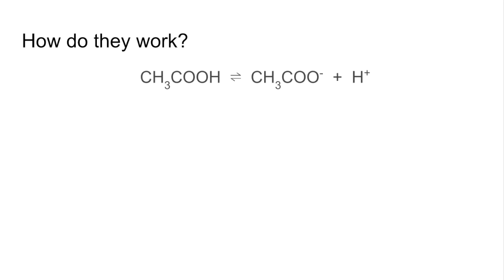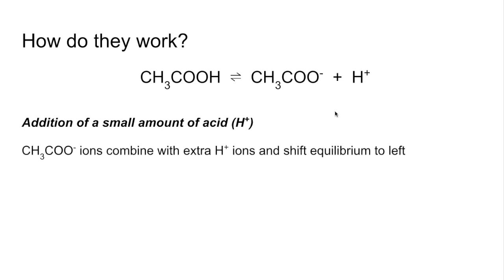So how do they work? There's the buffer system from the previous slide. If you add a small amount of acid or H plus ions you're going to increase the concentration of the H plus ions and so the ethanoate ions are going to combine with them and shift the equilibrium over to the left and that will restore the pH roughly to where it was.